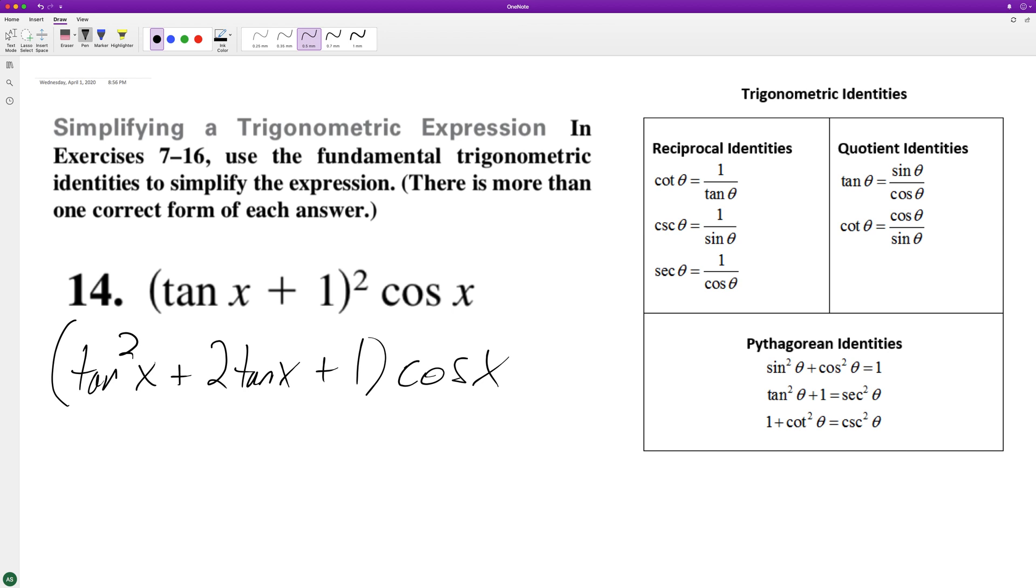So tangent squared X plus one is the same thing as the secant squared X. So we can do that inside here. So we end up with secant squared X plus two tangent X.